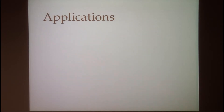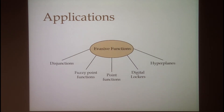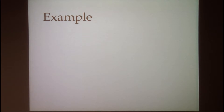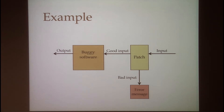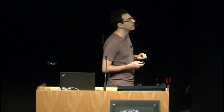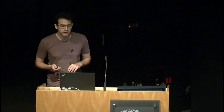Evasive functions generalize all of the function families that we know how to obfuscate today. As a concrete application, imagine you have some buggy piece of software that works well in most inputs, but there are some bad inputs that cause it to crash. You want to publish a patch that recognizes the bad inputs and filters them out. Because not all machines are being patched at the same time, you should obfuscate this patch so no one can use it to find out what the bad inputs are. We assume the set of bad inputs is evasive — if you only have black box access to the software, you can't learn the bad inputs.